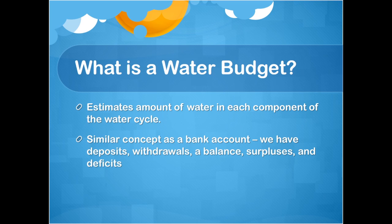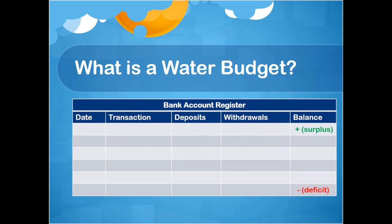We can think of a water budget like a bank account. We have deposits, withdrawals, and the final balance. In water budget terms, the deposits are called inflow, the withdrawals are called outflow, and the balance is the change in storage.